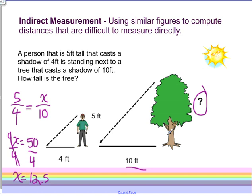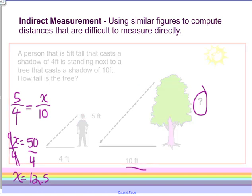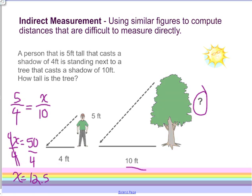And x is going to be equal to 50 divided by 4, which is going to equal 12.5. So, we know that the tree is going to be equal to 12.5 feet tall. Now, when you're solving these problems, and really when you're solving any proportion problems or scale mapping problems or any of that,